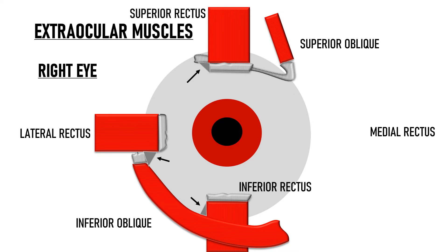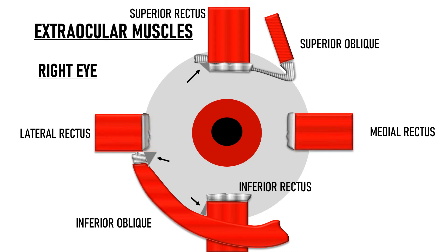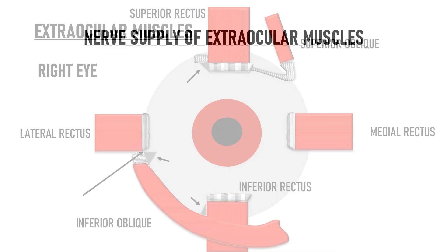If you lose hold of any other rectus muscle, its connections with adjacent muscles will prevent it from fully retracting. For example, if you lose hold of the lateral rectus, you can find it at the point where it connects with the inferior oblique. The medial rectus unfortunately has no such connections. Coming to the nerve supply of extraocular muscles, the nerve supply comes from three cranial nerves.